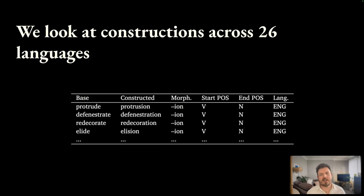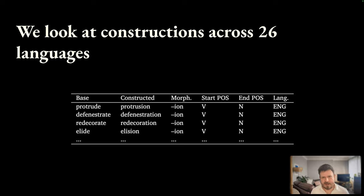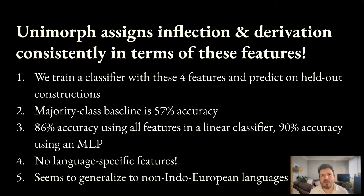We are able to look at constructions across 26 languages, a total of about 2,700 constructions, where each construction is a list of pairs of words related by a single morphological process. For example, you see the construction '-ian', the nominalization morpheme in English. We find that Unimorph actually assigns inflection and derivation highly consistently in terms of these features. We train a classifier with these four features as input and predict on held-out constructions based on whether they're listed as inflection or derivation in Unimorph.